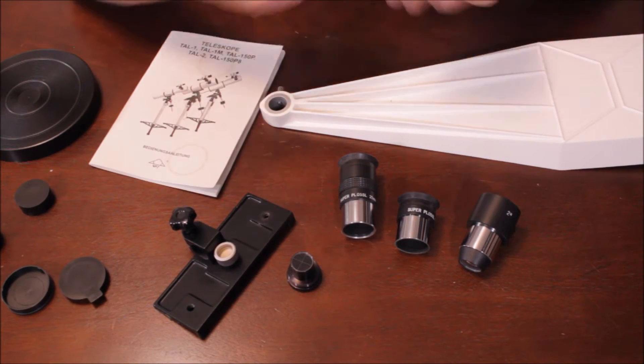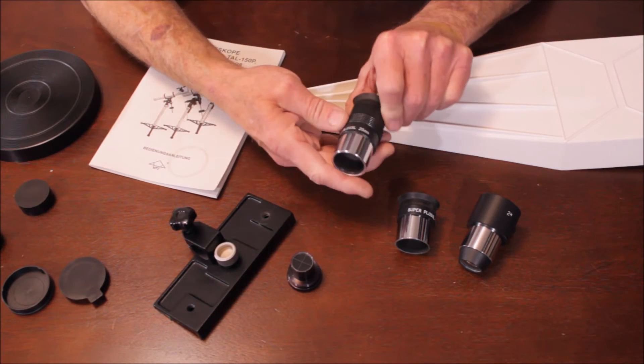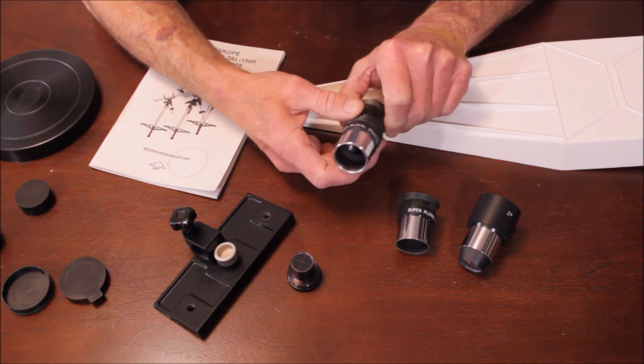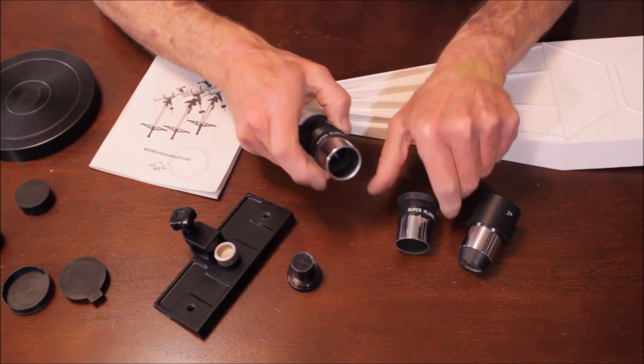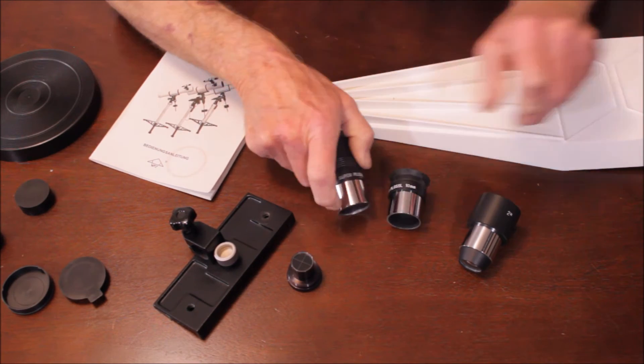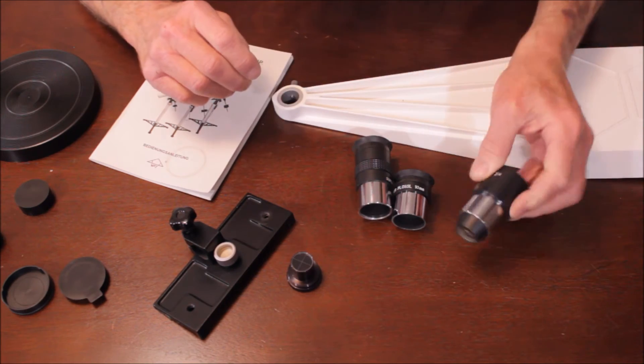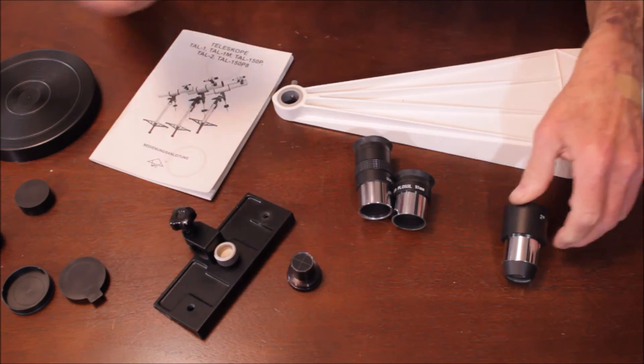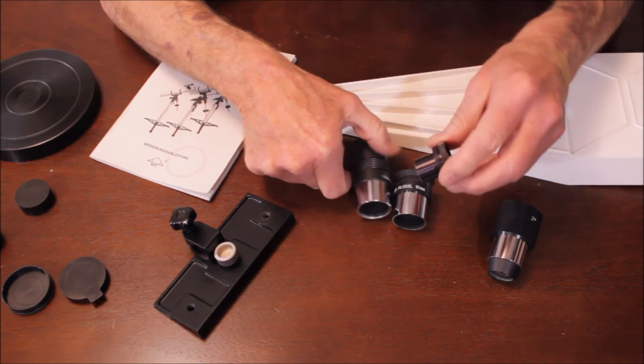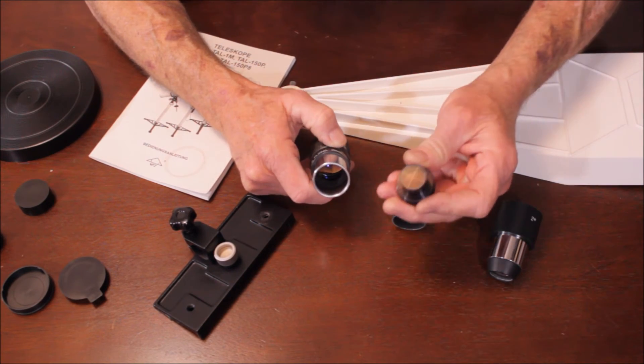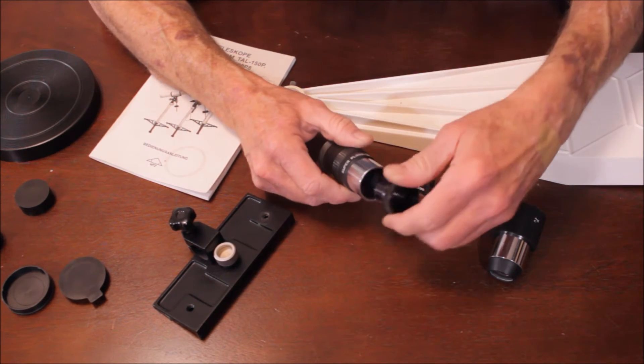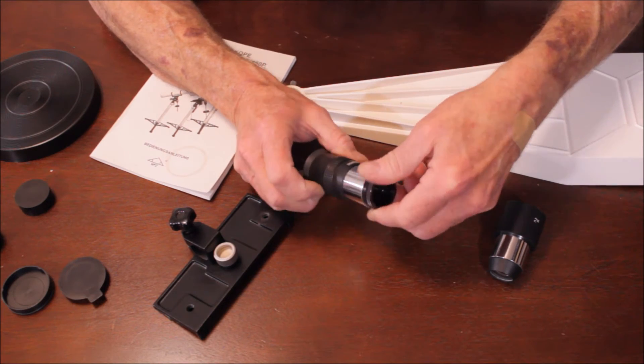Here are the accessories that come with the telescope. First of all, it's got a couple of nice Plossl eyepieces - this is called a super Plossl. I don't know what that means exactly, but it's a good eyepiece. Here's a nice little 2x barlow, a little unusual in its configuration.